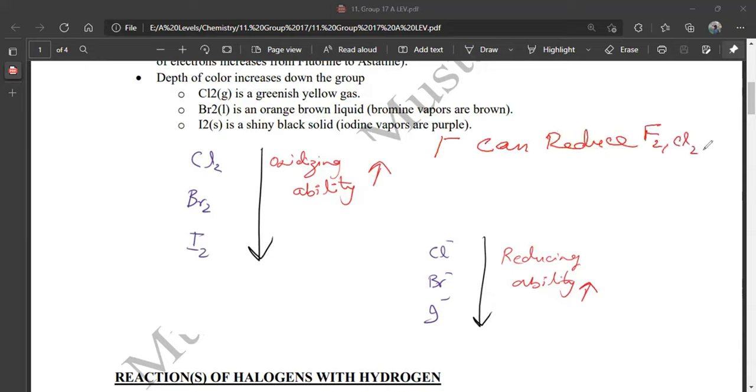Fluorine, Chlorine, Bromine. And so the F-, Cl-, Br-, and I- that is negative can reduce the halogens above them.